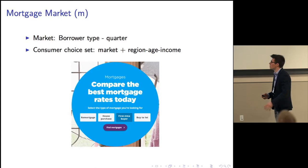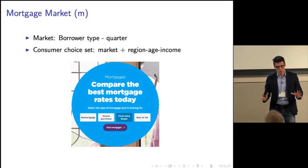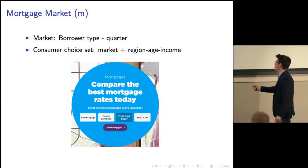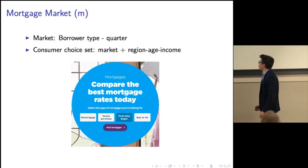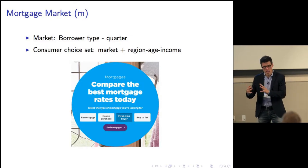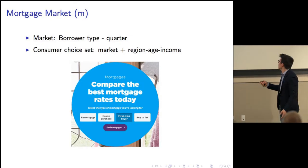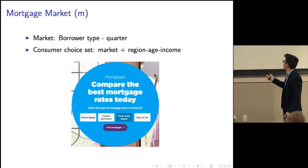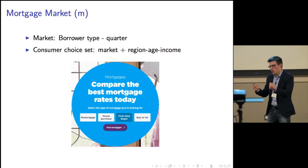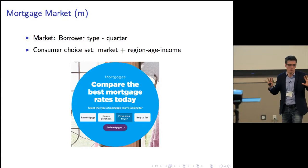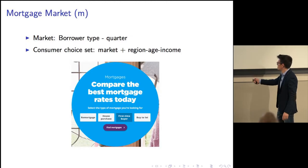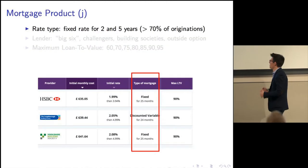A key definition is what constitutes a market in this type of model. A market is going to be a borrower type — for example, a first-time buyer — in a quarter, say Q1 2018. In order to account for rejection at least based on observables, I restrict the choices using information on the region where the borrower lives, their age, and their income. The idea is that similar people will look at similar mortgage products — similar to going to a price comparison website and having your choices appear based on your inputs.